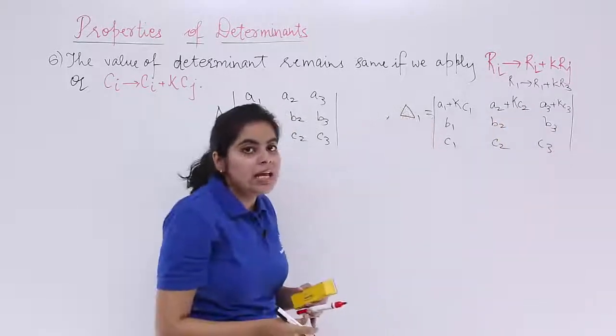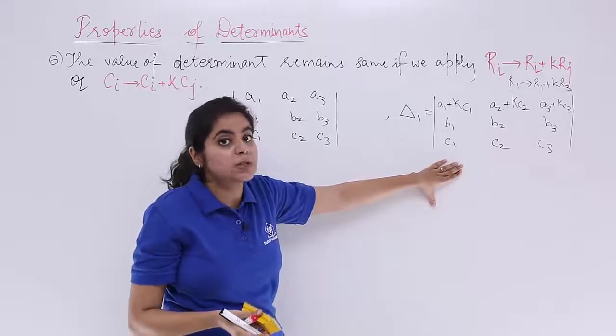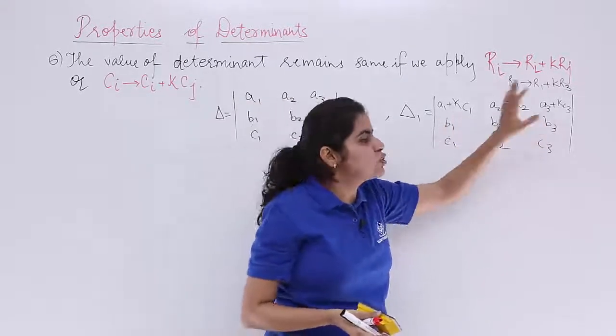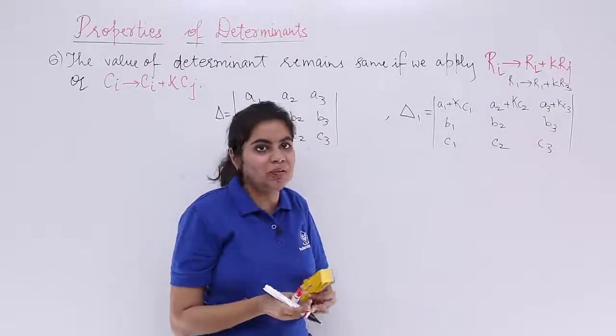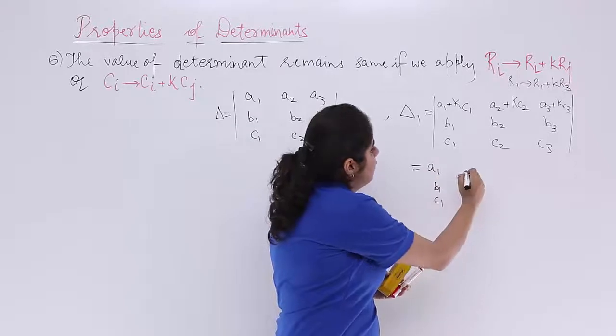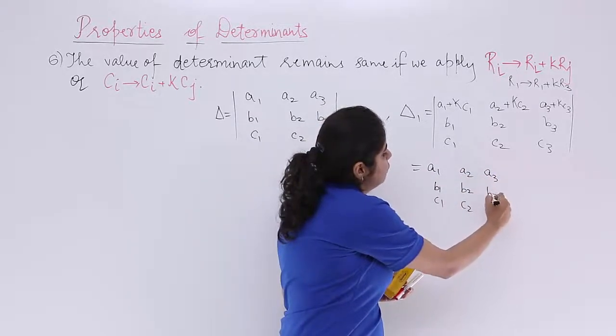Right? Now, if this is the case, I know from the previous property, that is property number 5. If sum is there of two elements, you can split the determinant always. So let's split it. It becomes a1, b1, c1, a2, b2, c2, a3, b3, c3. Right? That is the case of the first determinant.